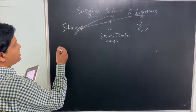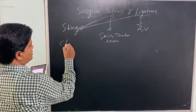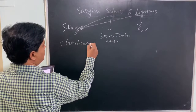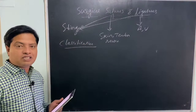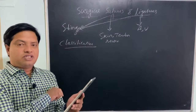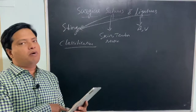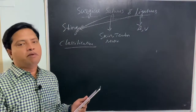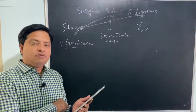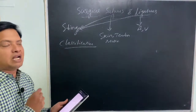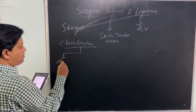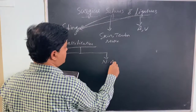Now we move on to the classification of surgical sutures and ligatures. They are classified into two types. If the stitch gets absorbed into the body, we call it an absorbable suture. If it needs to be removed from the wound once the wound is cured, we call it a non-absorbable suture.